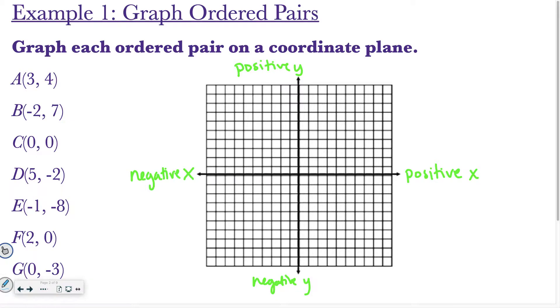So, if we start by graphing letter A, which is at (3, 4), you always start at the origin. So, you don't actually put a dot there, but I just wanted you to know where I'm starting with my pen. I'm going to move positive 3, because ordered pairs are always written x, y. It's always alphabetical order. So, I'm going to move 3 in the positive x direction, and then I'm going to move up 4 in the positive y direction. I'll label that point A.